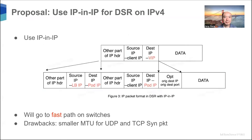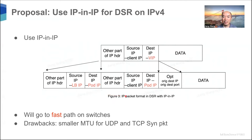The question is: can we do better? We propose using IP-in-IP for DSR for IPv4. Basically we use IP-in-IP, meaning we have two IP headers. We keep the original IP packet with the source IP and destination IP as the VIP. Then we add another IP header as the outer IP header, where the source IP is the load balancer IP and the destination IP is the pod IP. There are no IP options this time. The switch will not check the inner header — it will just check the outer IP header — so packets will not go to the slow path on the switches.